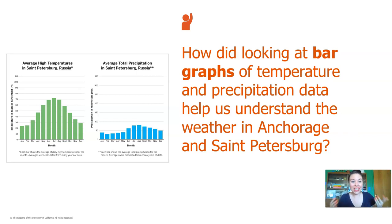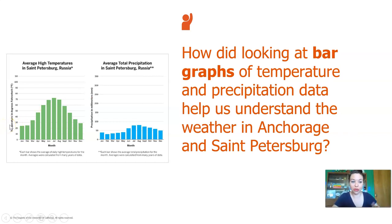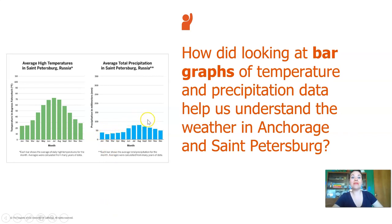Looking at graphs, especially bar graphs, helps us understand patterns in the weather. For example, when we looked at the average high temperature in St. Petersburg, Russia over a year, we could see a pattern of low temperature, high temperature, low temperature. And the precipitation showed a similar pattern — low, high, low. That helps us figure out patterns and seasons, which is a really important part of weather.